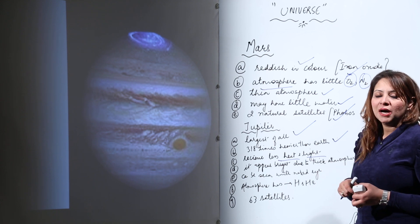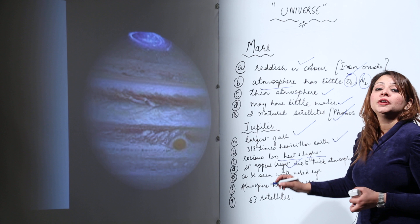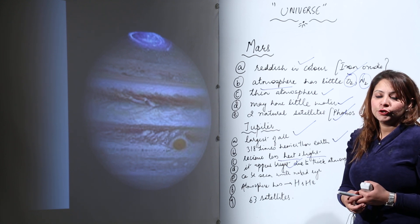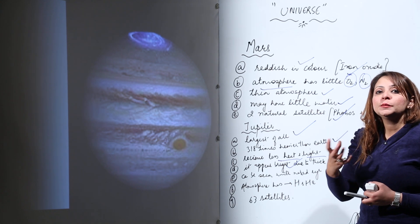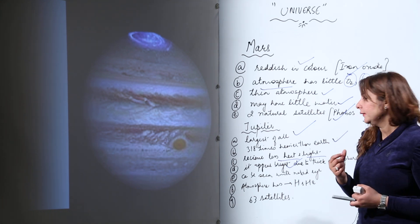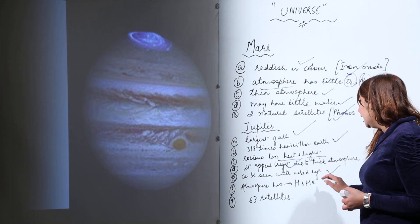But still, it appears bright because it has a thick layer of atmosphere which reflects the light that falls on it, which makes it visible as a bright planet. As I told you, it can be seen with the naked eye also. It has an atmosphere which has hydrogen and helium.